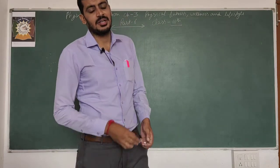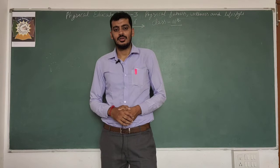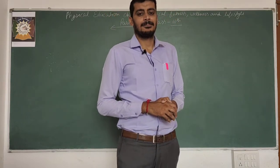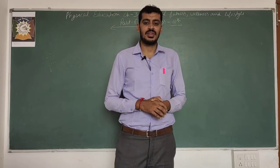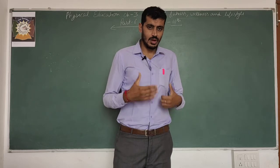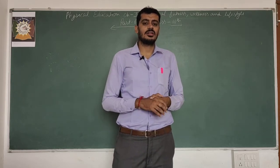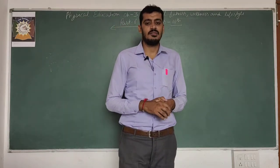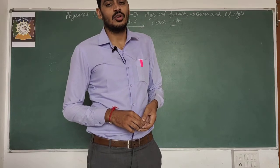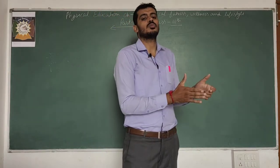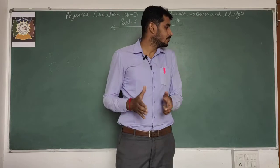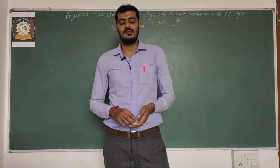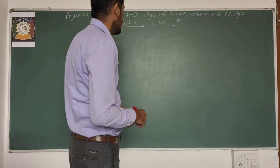In the previous part we completed flexibility. The range of movement of a joint is called flexibility, and there are two types: active or passive. Active is done with our own body strength, while passive is done with external help, like a partner. Active flexibility has two parts: active static or dynamic. Static means without movement, dynamic means with movement.